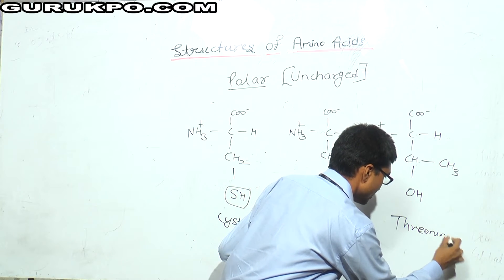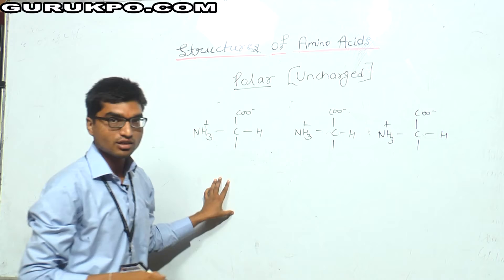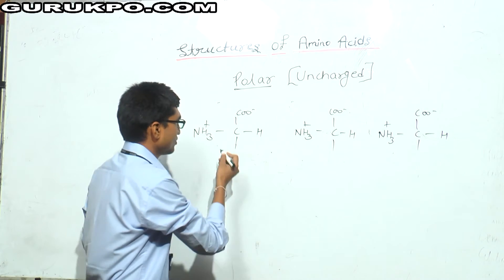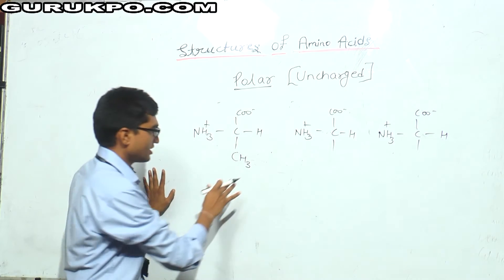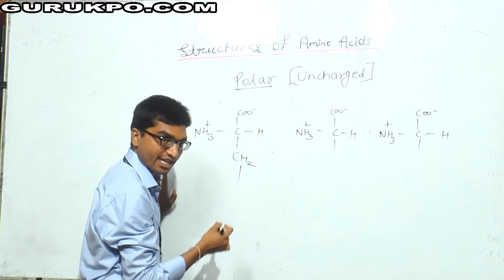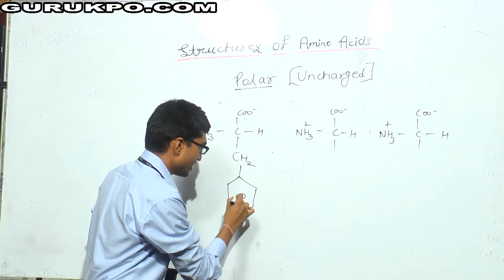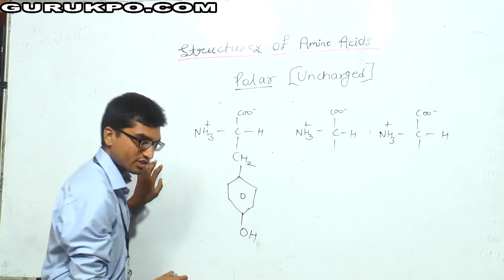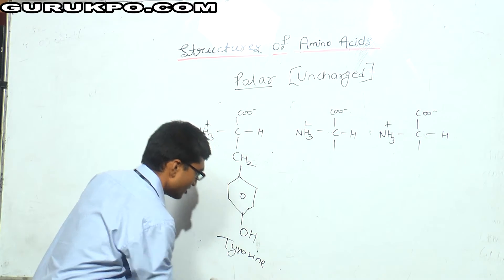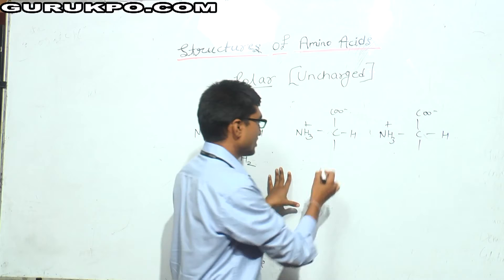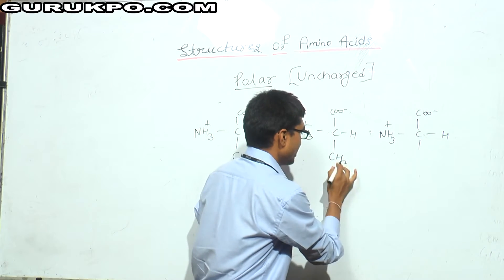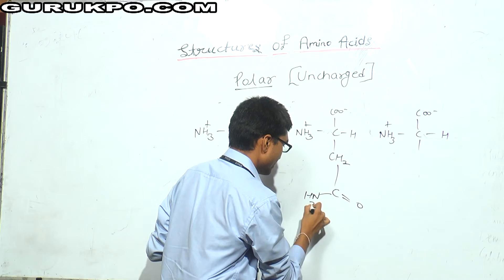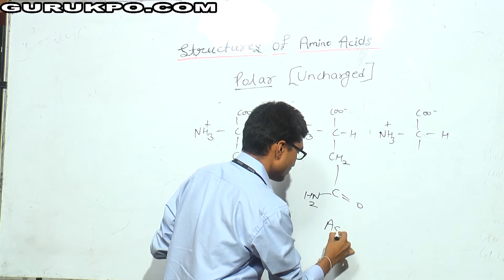So I have formed three amino acids — cysteine, serine, and threonine. All types of polar uncharged structures can be easily formed from alanine. If I replace one hydrogen with a phenyl group (C6H5), I will get phenylalanine. From phenylalanine, if I place an OH group on the ring, I will get tyrosine. Again from alanine, if I replace one H with a CO-NH2 group, I will get asparagine.